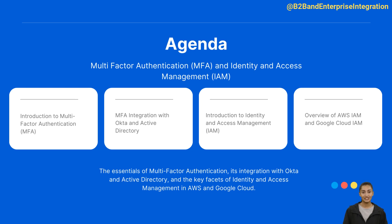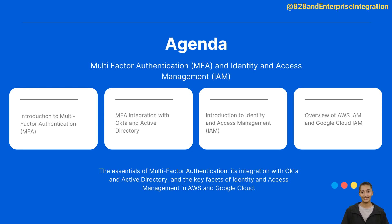3. Introduction to Identity and Access Management, IAM. Transitioning from MFA, we will introduce IAM, an essential element in cloud security that helps manage access to resources securely. IAM revolves around who can do what. 4. Overview of AWS IAM and Google Cloud IAM. We'll delve into the specifics of AWS IAM, discussing its policies and how they control access to AWS services. Next, we'll discuss Google Cloud IAM, showcasing its capabilities and drawing comparisons and contrasts with AWS IAM. We'll highlight how both IAM services are crucial in maintaining secure and controlled access to their respective cloud resources.